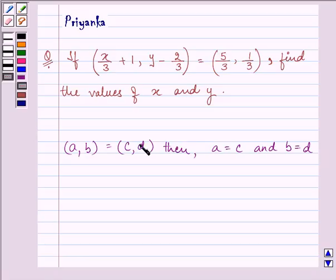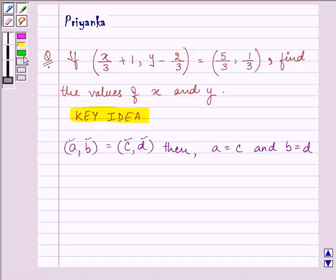Two ordered pairs are equal if and only if the corresponding first elements are equal and the corresponding second elements are also equal. So, the knowledge of ordered pairs and their equality is the key idea that we are going to use in order to proceed with our solution.